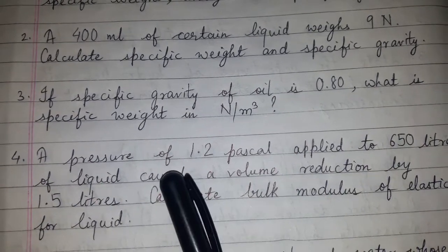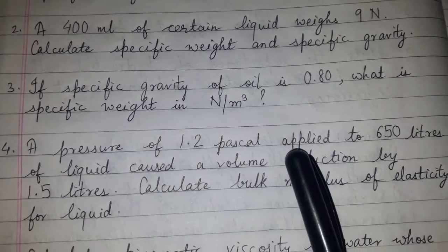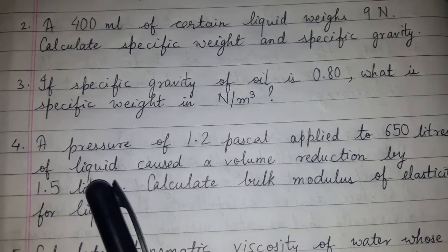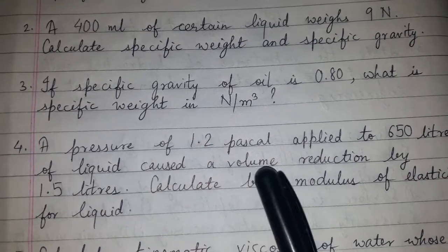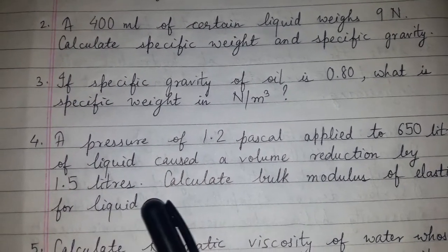A pressure of 1.2 Pascal applied to 650 litres of liquid caused a volume reduction by 1.5 litres. Calculate bulk modulus of elasticity for liquid.